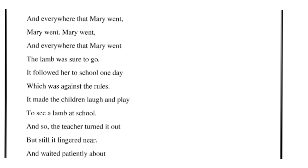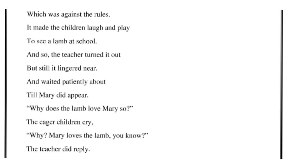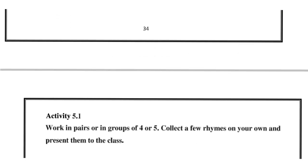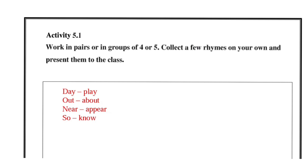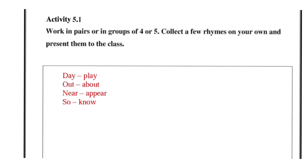And so the teacher turned it out, turned it out. But still it lingered near, and waited patiently about, till Mary did appear. Why does the lamb love Mary so? The eager children cry. Why Mary loves the lamb you know, the teacher did reply. Here is the poem — you have to read it. Work in pairs and in groups of four or five, collect a few rhymes on your own and present them in class. Rhyming words: day/play, out/about, near/appear, so/no.